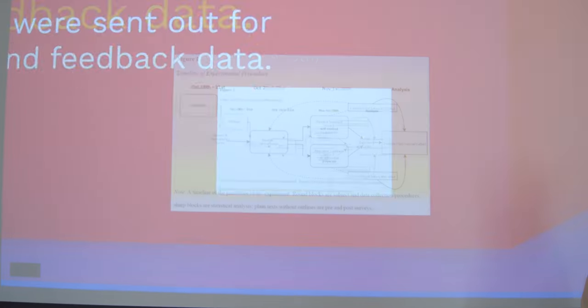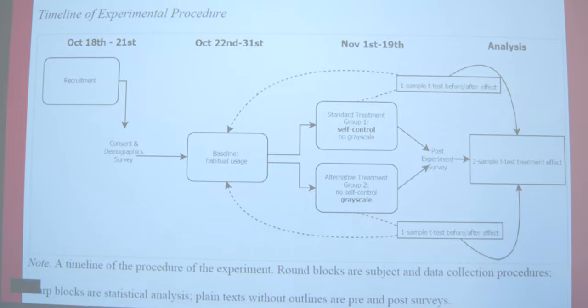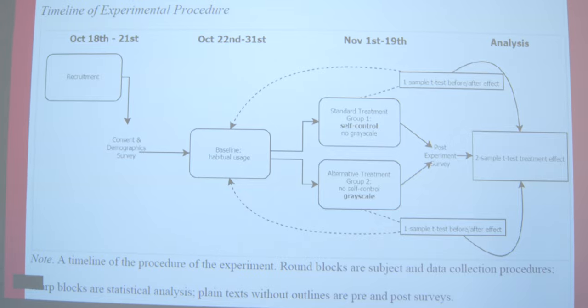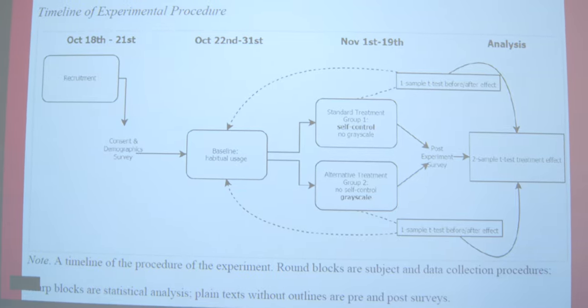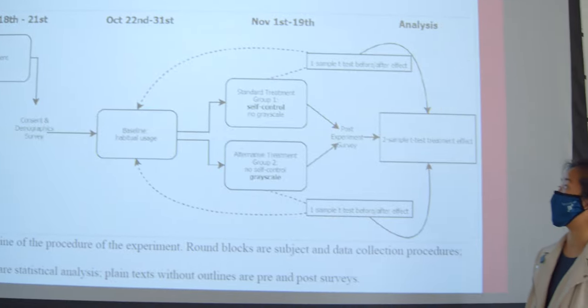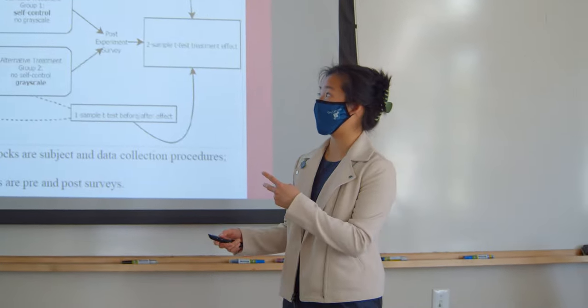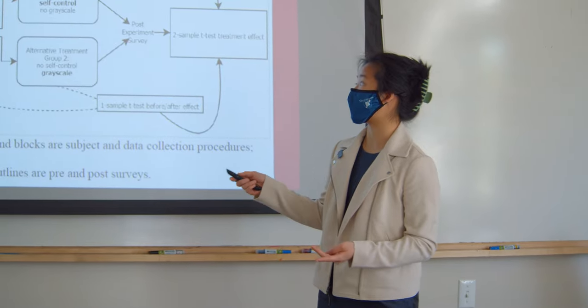There are a couple of phases in this experiment. The first phase is the baseline phase after recruitment, where they would just use their phones normally for 10 days. After that, there's a 19-day period of experiment where the two groups are engaged in the treatment: the standard treatment and the alternative treatment.